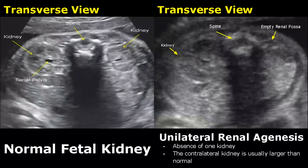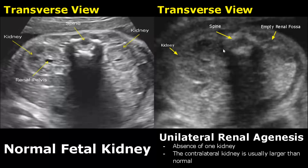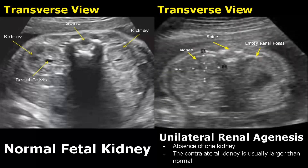In unilateral renal agenesis, there is absence of one kidney. In the normal image you can see two kidneys, whereas in this image there is only one. There is an empty renal fossa with no kidney present, and the remaining kidney is enlarged, usually because of compensatory mechanisms. Here we have another image of unilateral renal agenesis — we can only see one kidney and there is an empty renal fossa.